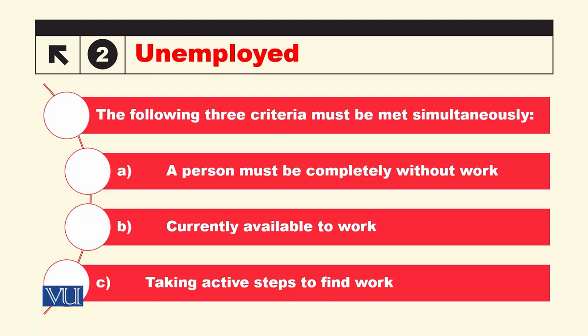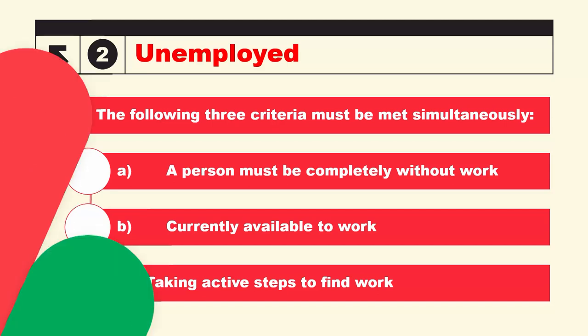Dobara main isse repeat kar raha hoon: the person is in the working age group, he or she is available for work, and the person is actively looking for work but is unable to find work — even for one hour in the last week. This person will be considered as unemployed.